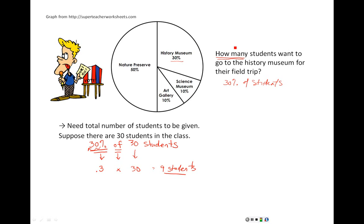So again, pay attention to what your question is asking. If it asks you for a percentage, we can find that information straight from our pie chart. If it asks something about how many, then we're actually going to need to know a number. And because our pie chart only gives us percentages, we would need to know the total to be able to take that next step and actually come up with the solution that we're looking for.